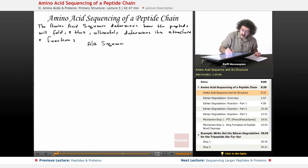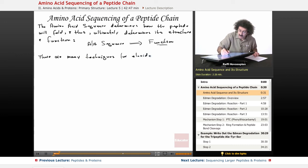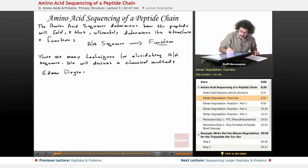Amino acid sequence implies the function, and that's what's important in a protein: what does it do? There are many techniques for elucidating amino acid sequence. We will discuss a chemical method still used in laboratories. It is called the Edman degradation.